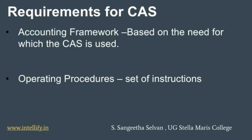There are two requirements for a computerized accounting system to function. The first is the accounting framework, based on the need for which the computerized accounting system is used — the framework is decided according to which purpose you are using it for. For example, if you are using this for payroll accounting, the framework is decided accordingly; and similarly, if you use it for inventory, the framework is different.